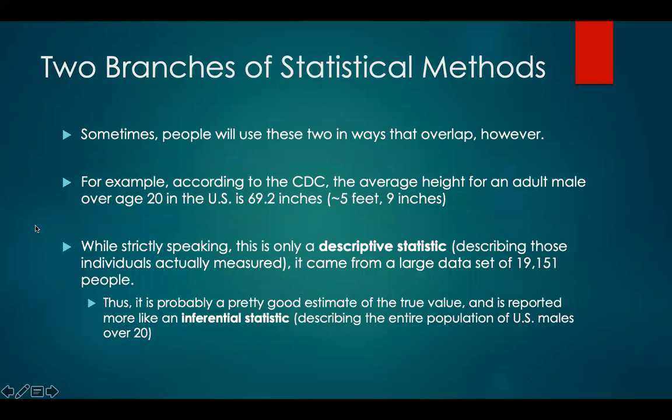Sometimes people use these two varieties of statistics in ways that overlap. For example, according to the CDC, the average height for an adult male over age 20 in the United States is 69.2 inches, or roughly 5 feet 9 inches. Now while strictly speaking this is only a descriptive statistic — describing only those individuals actually measured — it came from a very large data set of roughly 20,000 people. Since this data set is so large, it's probably a pretty good estimate of the true value in that population and is reported more like an inferential statistic describing the entire population of U.S. males over age 20.